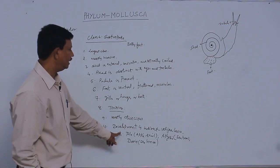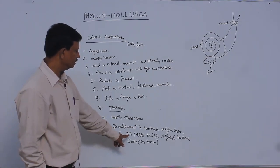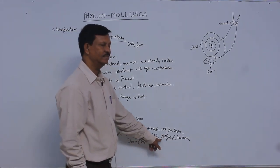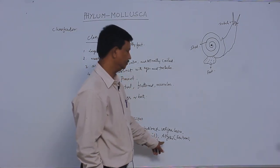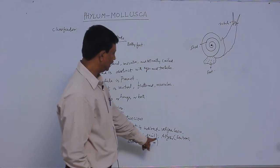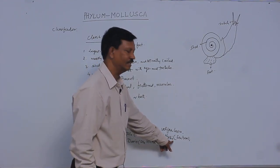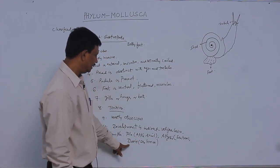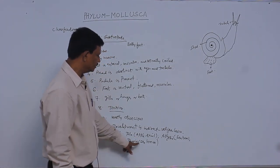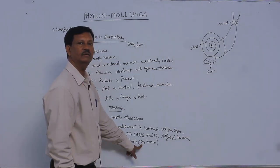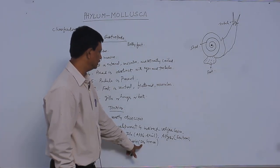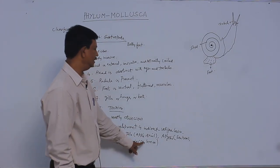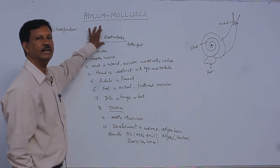Best examples include Pila, known as the apple snail, and Aplysia, known as the sea hare, where the shell is internal. Another example is Doris, known as the sea lemon because it resembles a lemon found in the sea, where the shell is absent. These are examples that come under Gastropoda.